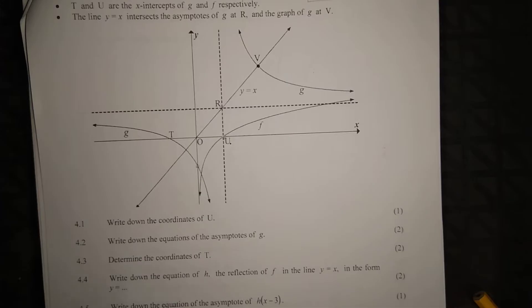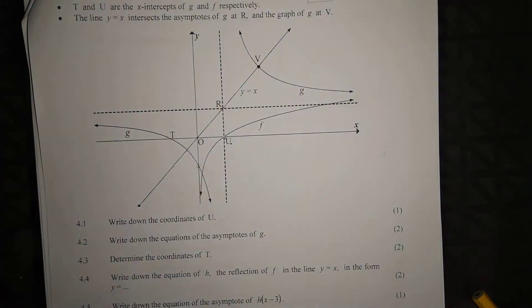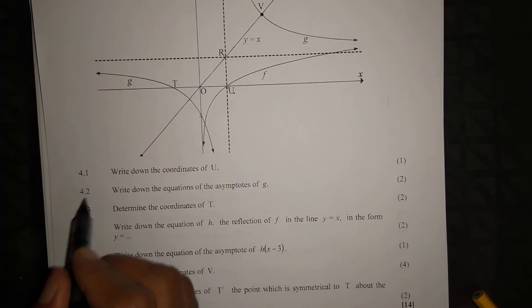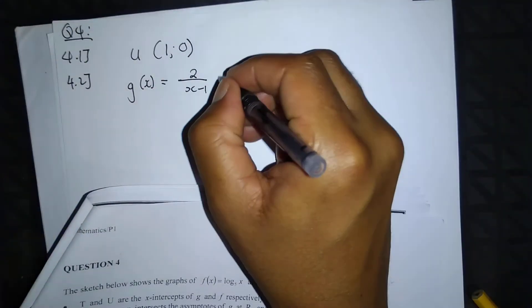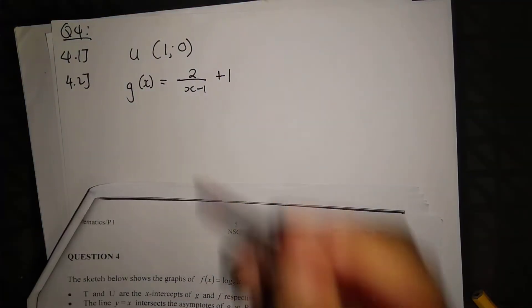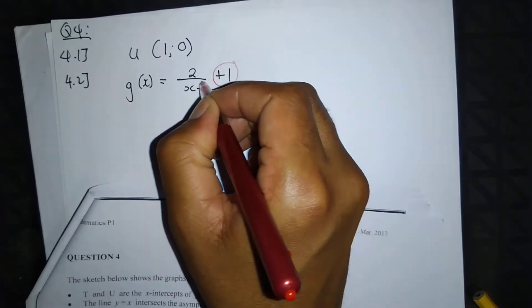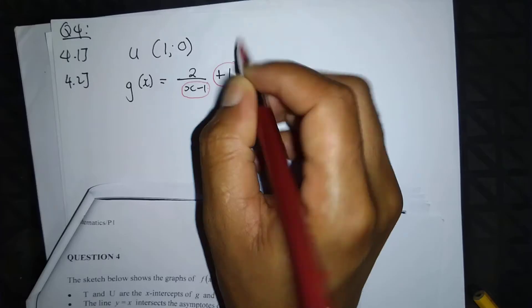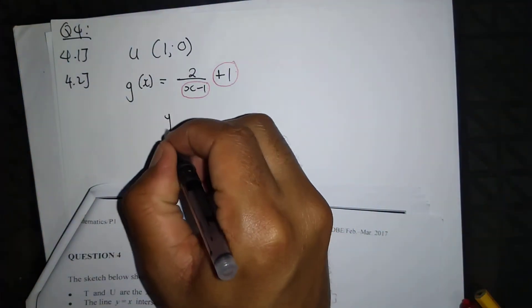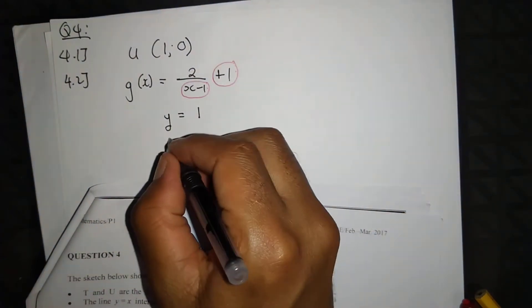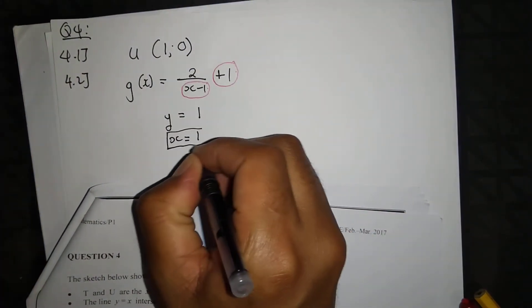Understanding the concept behind these questions is key, especially when analyzing graphs with asymptotes. Question 4.2: write down the equations of the asymptotes of g. Function g has the form with plus 1, so the asymptotes come from the denominator and the constant.